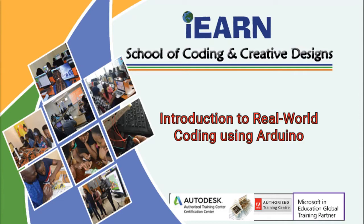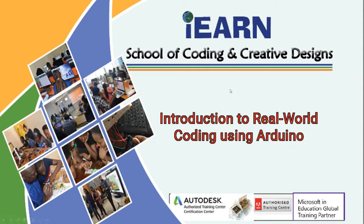Today we will be talking about Arduino — this is Lesson 4, the fourth lesson for Arduino. We are going step by step. We want to look at what we are talking about generally regarding inputs and outputs. In Arduino, the board receives inputs, and some of the pins become output while some become input to receive signals.